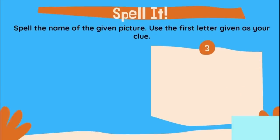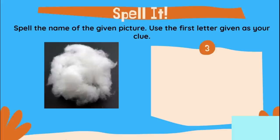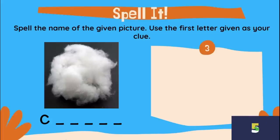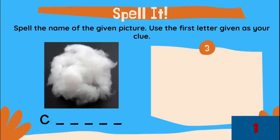Let's have our third picture. What do you call this one? It starts with letter C. What do you think is the word? Type now your answer in the comment box. And the correct word for number three is cotton, C-O-T-T-O-N. If this is your answer, you are awesome.